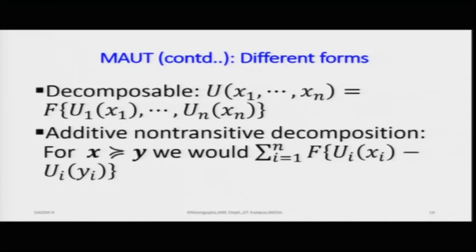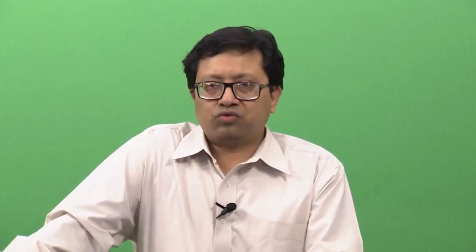This is analogous to finding joint probability distributions: the first case is the marginal case, then bivariate, trivariate, and so on. In the decomposable form, the utility function U(x1 ... xn) is given by a functional form as a function of the individual utilities u1, u2, u3 through un — that functional form gives us the decomposable form of MAUT.